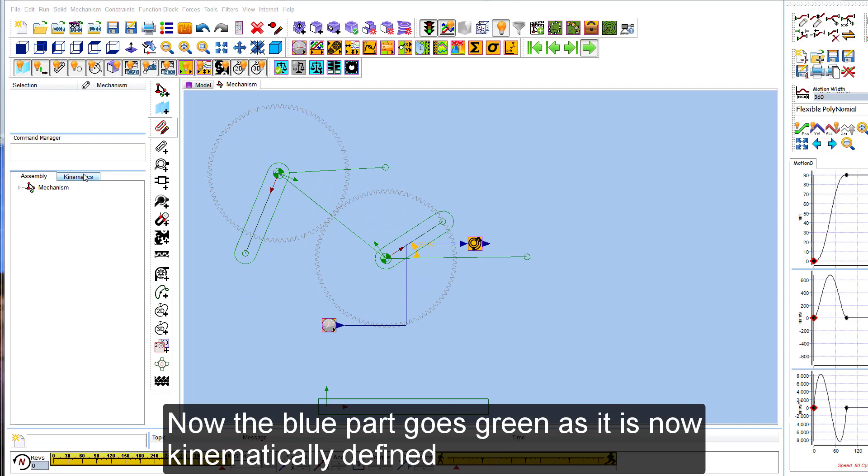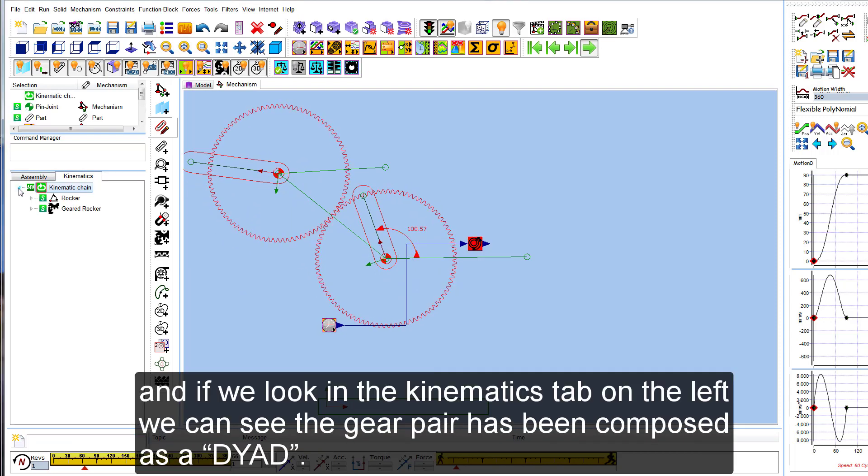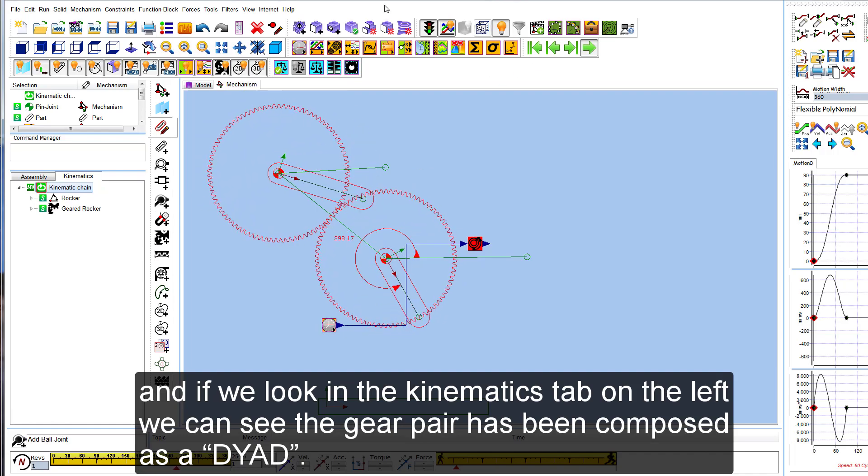Now the blue part goes green as it is now kinematically defined, and if we look in the kinematics tab on the left we can see the gear pair has been composed as a dyad.